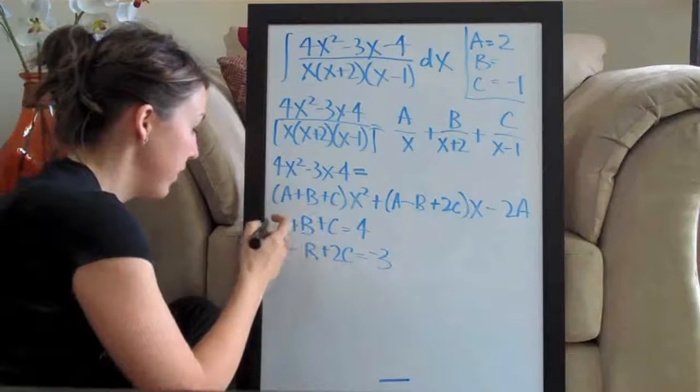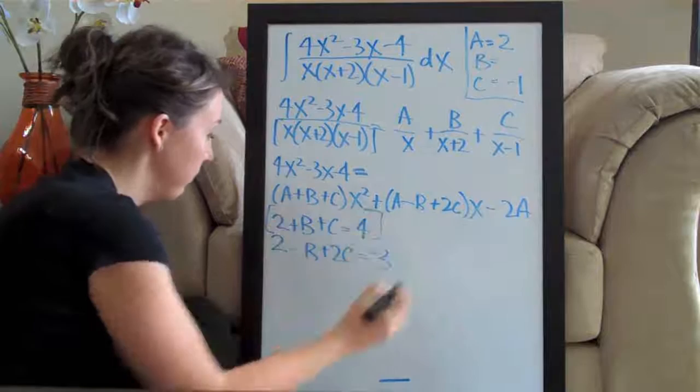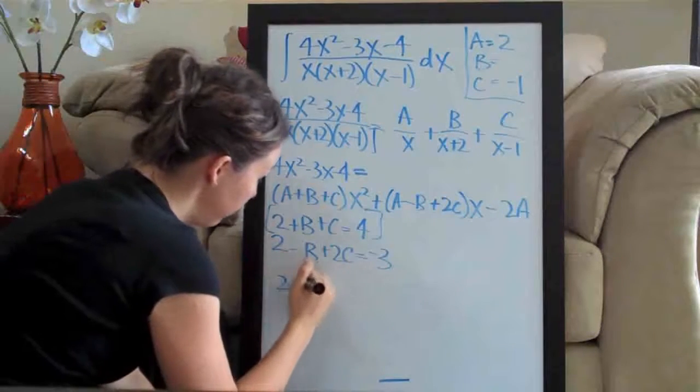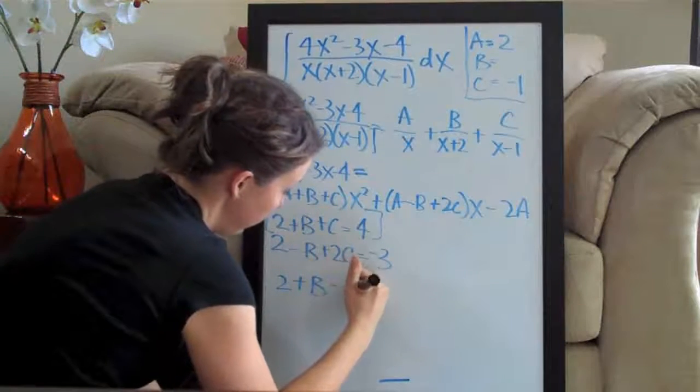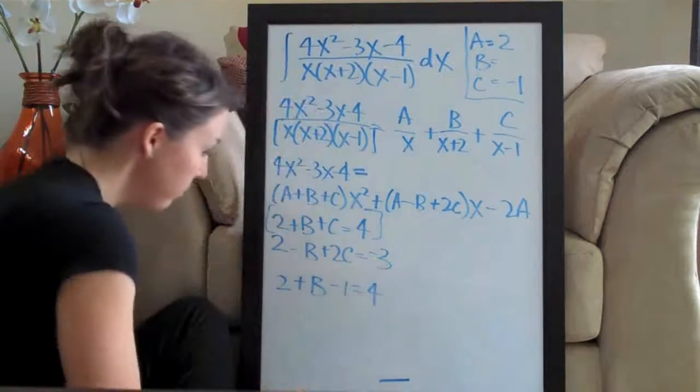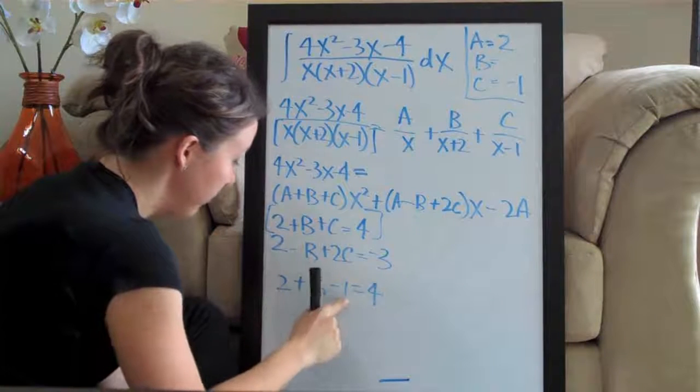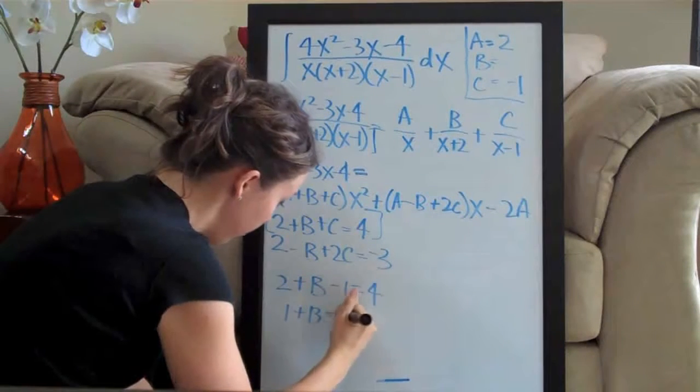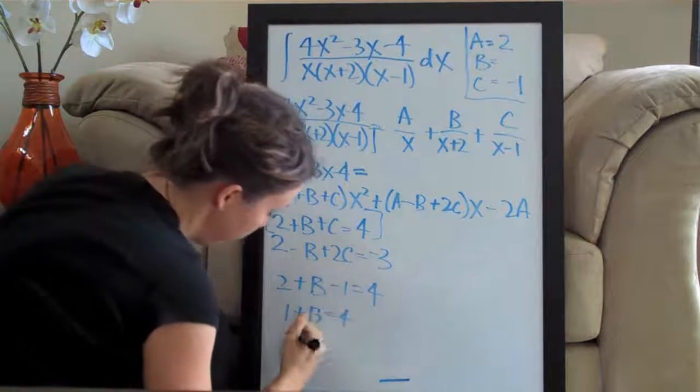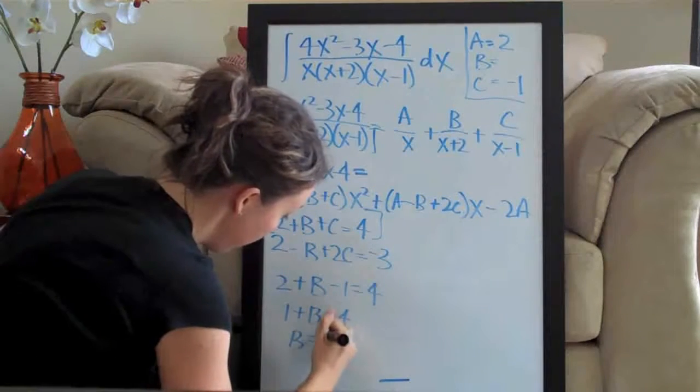So, let's use this first one here because it looks like it might be a little easier to do. So, we've got 2 plus b and then we said c was negative 1. So, minus 1 equals 4. So, 2 minus 1 is 1. 1 plus b equals 4. We subtract 1 from both sides and we get b equals 3.